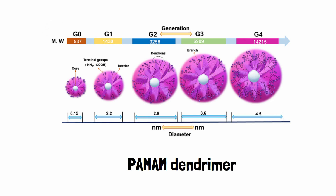Considering that the size, shape, and flexibility of PAMAM dendrimer changes with the generation, a suitable generation should be selected for controlling the efficiency of metal encapsulation.